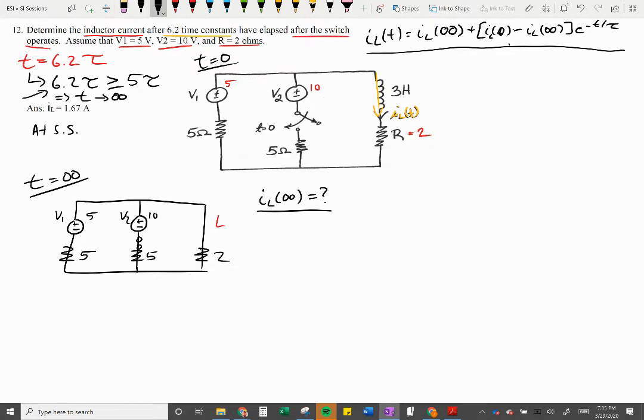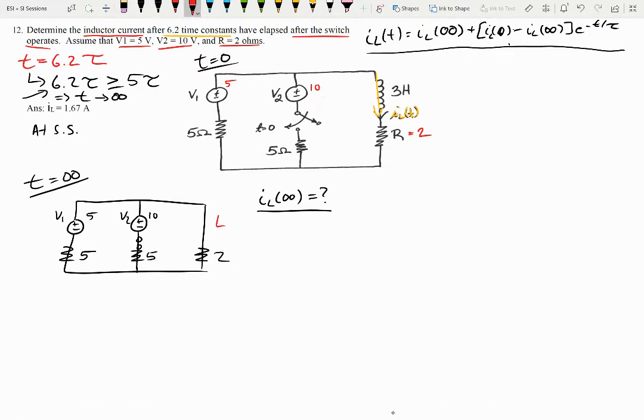Because this up here, we could go solve for the rest of this. But what ends up happening is that this term ends up getting to the point where it effectively just cancels this out. Like this term gets so small, it cancels that out. Whatever that value is. So we can say I of L at 6.2 tau is I of L at infinity.